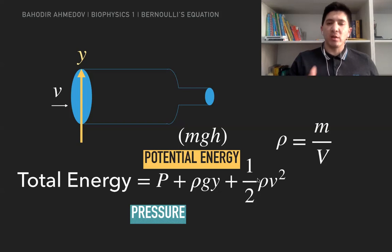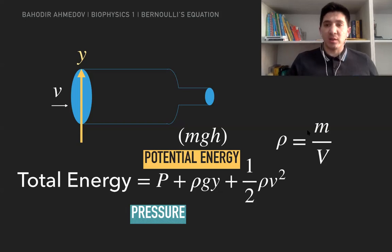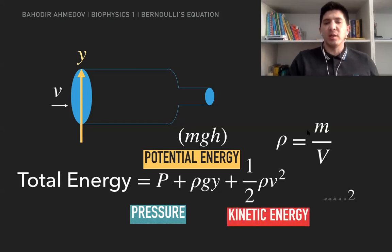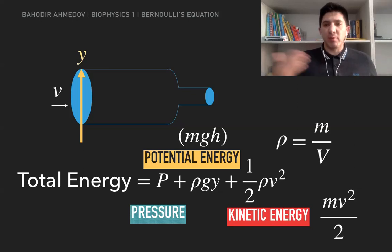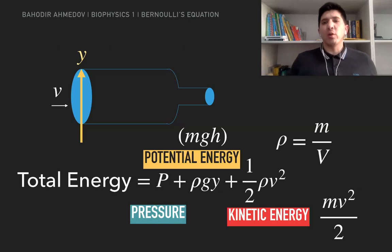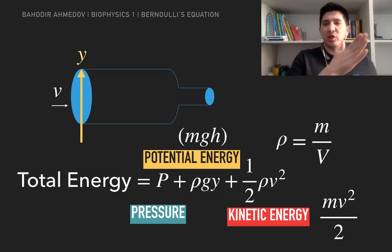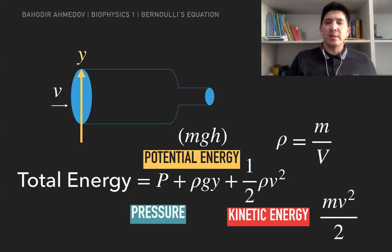And the third term — if rho is proportional to the mass, then one-half times rho times v-squared becomes one-half times mass times velocity squared, which is the kinetic energy. So it appears the total energy of the fluid is going to be the sum of the pressure plus the potential energy plus the kinetic energy. And Bernoulli's equation tells us that the total energy is conserved over all parts of the fluid inside the pipe.